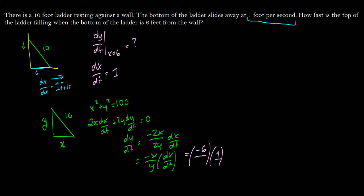So how do we find y? Well, we have our formula here, x squared plus y squared is equal to 100. So when we plug x is equal to 6 in there, then we get 36 plus y squared is equal to 100. So we're going to get y is equal to 8. So we can plug that in there.